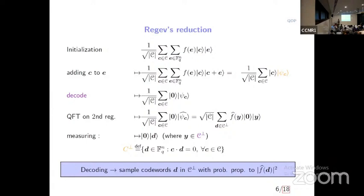If you can solve the classical decoding problem, you can do this. But unfortunately, there is no good way of solving it classically — all classical algorithms are exponential. However, if you look at what we have at this point, you can rewrite the state as a superposition over all possible codewords, and the amplitude at C is precisely the sum of F of E over C plus E — exactly what we have for the quantum decoding problem. So if the quantum decoding problem is easier, solve it instead.